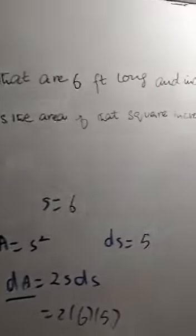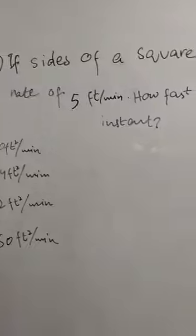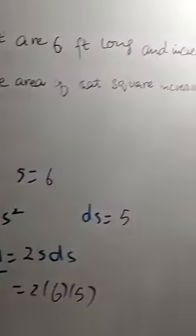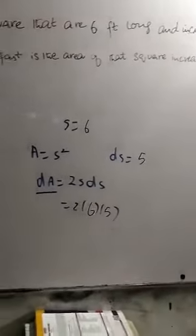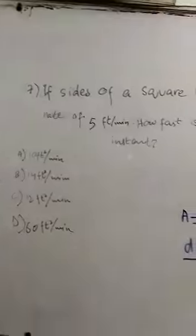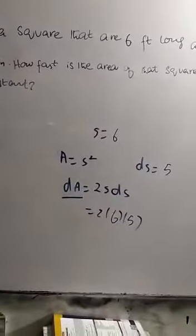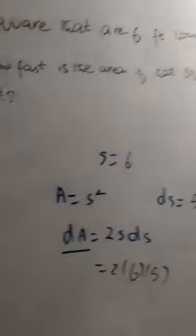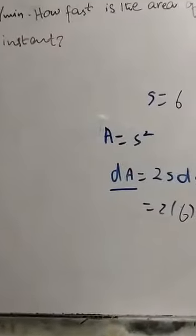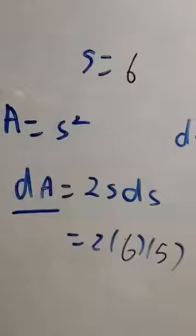If sides of a square that are 6 feet long and increasing at rate 5 feet per minute, how fast is the area of that square increasing at that instant? If the side is 6 and the rate is 5 feet per minute. So you are asking how fast is the area of that square increasing at that instant? Area formula is side squared.